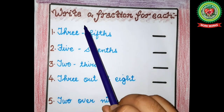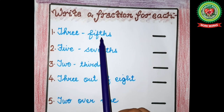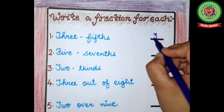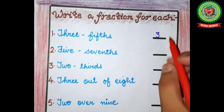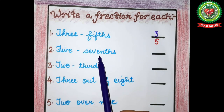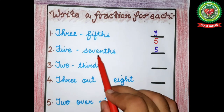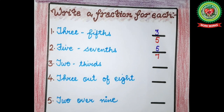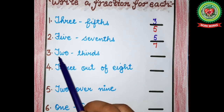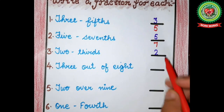Now let's learn how to write a fraction for given fractional numbers. 'Three fifths': three is the numerator, and 'fifths' means five is the denominator — three upon five. Next: 'five seventh' — numerator is five and denominator is seven. Next: 'two thirds' — two is the numerator and 'thirds' means three is the denominator — two upon three.